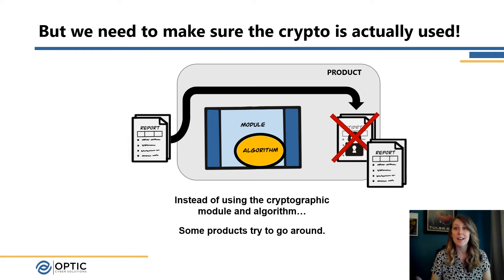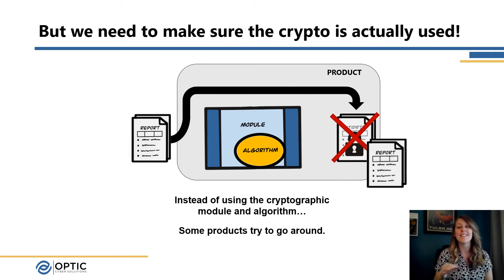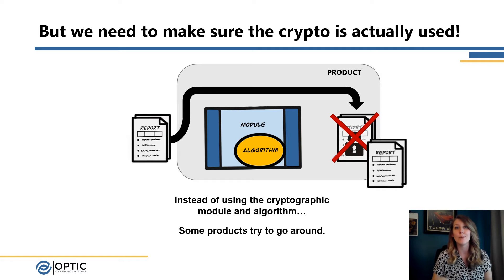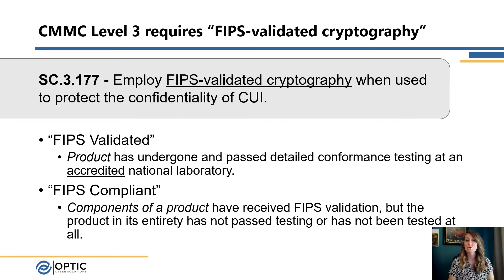Bringing it back to our encryption requirements, we really want to make sure that as we are encrypting our CUI data, it's going through the module appropriately — that it's not driving around the gate. We don't want a product that may have some sort of encryption included but that we're just going around. We want to make sure that when we encrypt the data, it's actually coming out on the other side as ciphertext and not just as plain text.